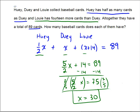So x equals 30. Huey has half of x, and x is 30, so Huey has 15. Dewey had x, which is 30. And Louie had 14 more than x, so 30 plus 14, which is 44.